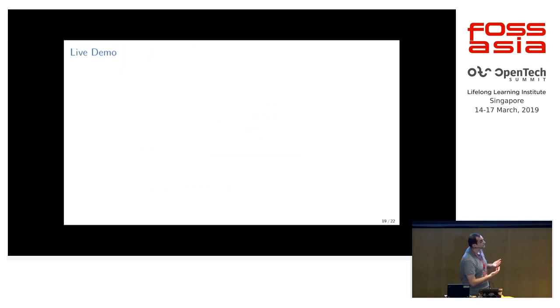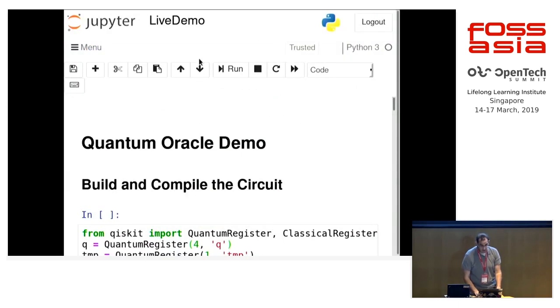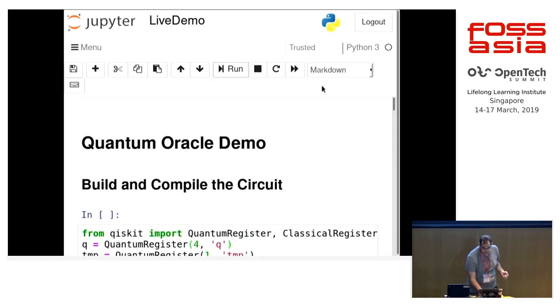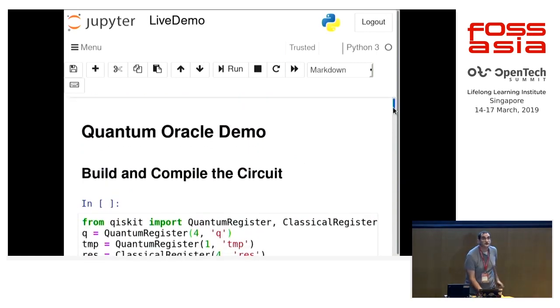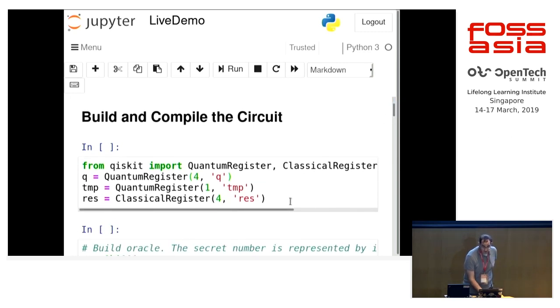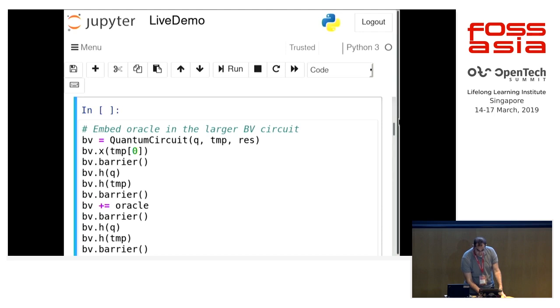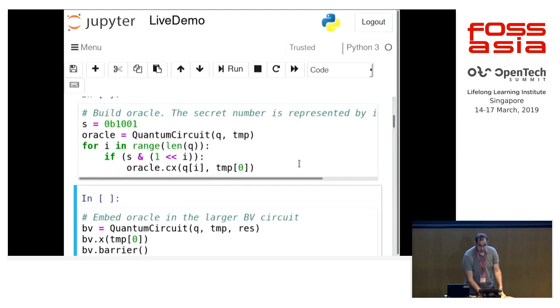Is this legible to everyone? So the first thing we do is we create our quantum registers, which are just the qubits. We make one four-bit for our input, the four bits for Q. We have the one qubit for the temp. And then our four bits, classical bits, for the result.